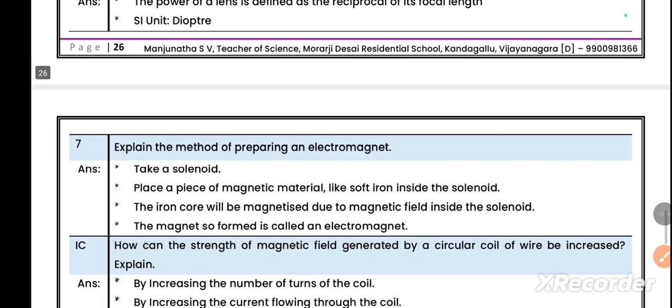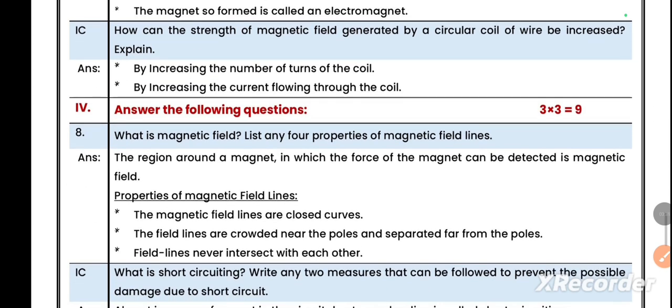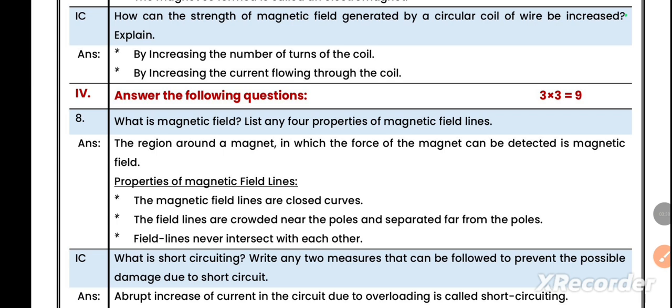Seventh question: explain the method of preparing an electromagnet. Take a solenoid, place a piece of magnetic material like soft iron inside the solenoid. The iron core will be magnetized due to the magnetic field inside the solenoid. The magnet so formed is called an electromagnet. Another question: how can the strength of a magnetic field generated by a circular coil of wire be increased? By increasing number of turns of the coil, by increasing the current flowing through the coil. Very simple and important also.